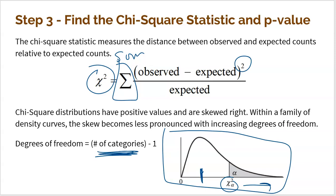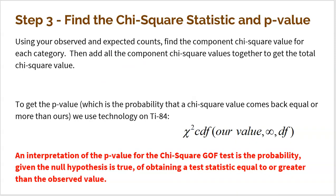To sum up: just like a Z-score or T-score tells us where our sample falls in the data, that's exactly what chi-squared does — it tells us where our observed values fit within what was expected. We'll demonstrate how to find that value several times in this video. Once we have that chi-squared, we need the p-value. So using your observed and expected counts, find the component chi-squared value for each individual category — observed minus expected squared divided by expected. We call those the component chi-squareds. Find each one for each category and then add them all together to get the total chi-squared value.